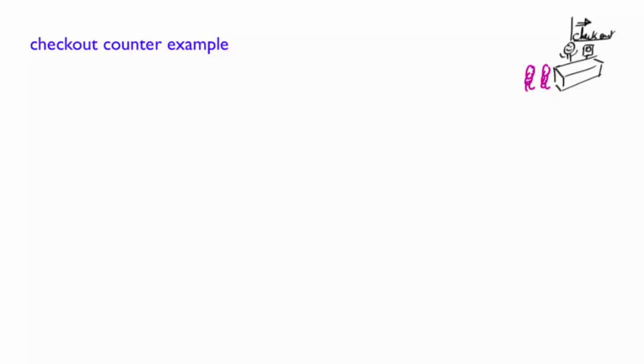So what events of interest could happen? A new customer could join the queue - this is an arrival. Or the customer currently being served is done and leaves - a departure. Or both events could happen.